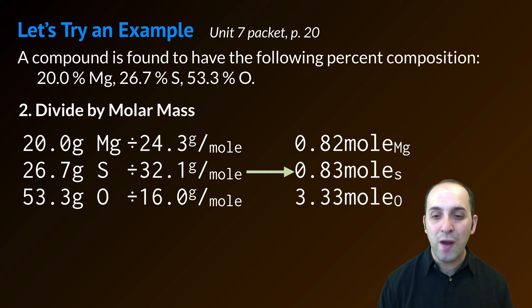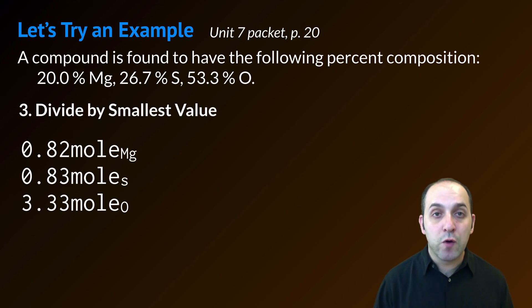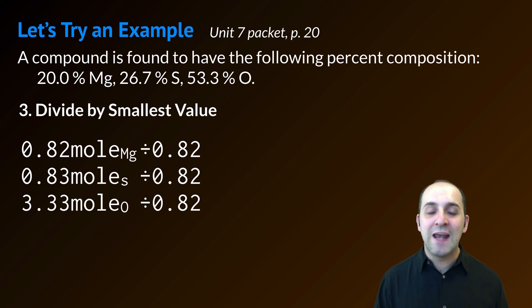These substances are in a 0.82 to 0.83 to 3.33 mole ratio, magnesium to sulfur to oxygen. Step three requires me to divide by the smallest value that I've determined. The smallest value here is 0.82. I'm going to divide each of these by 0.82, and that's going to give me one magnesium, one sulfur, and four oxygens.